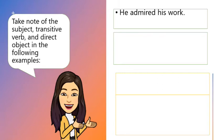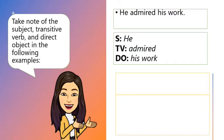What do you think? He admired his work. He is the subject, admired is the transitive verb, and his work is the direct object.